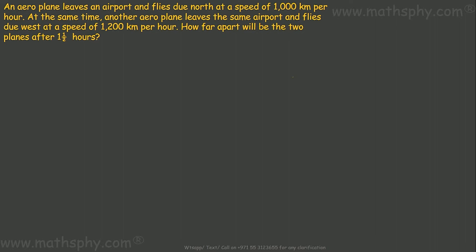Okay, so first of all, distance covered by plane 1 going north would be 1,000 km per hour into 1.5 hours, which is 1,500 km. Distance covered by plane 2 going west, this is going at 1,200 km per hour, in one and a half hours this will go 1,800 km.